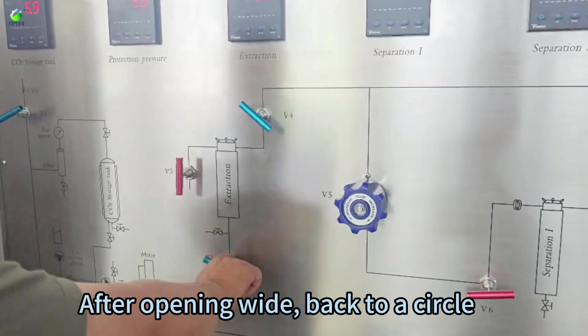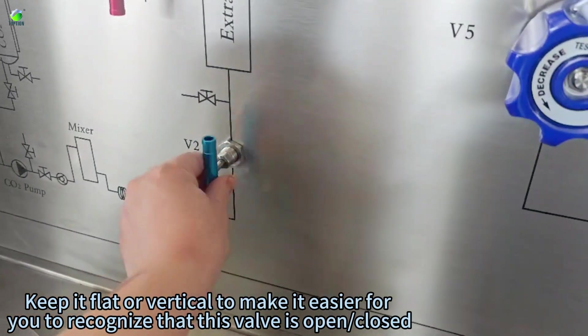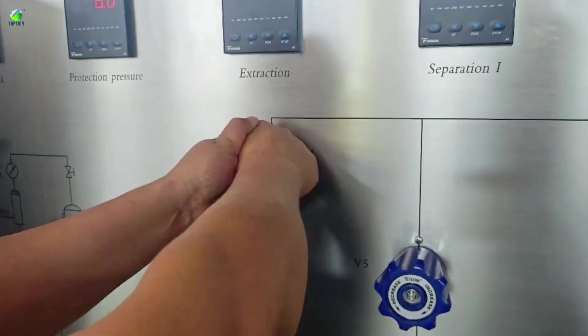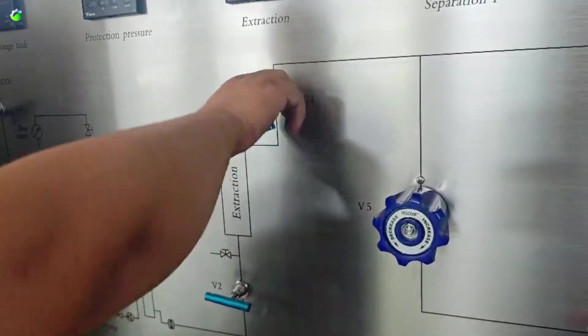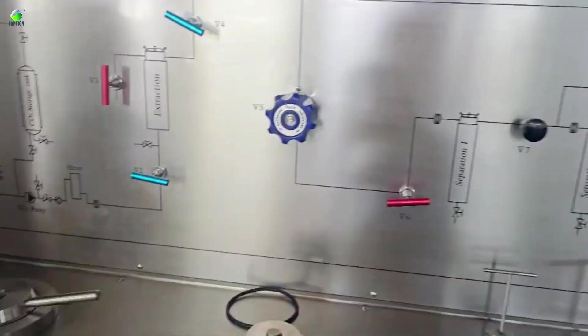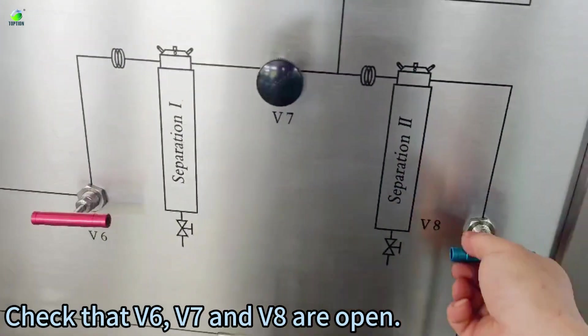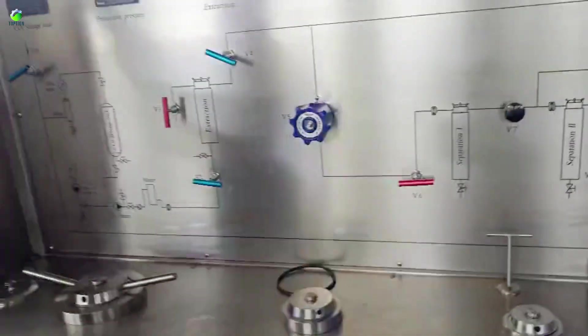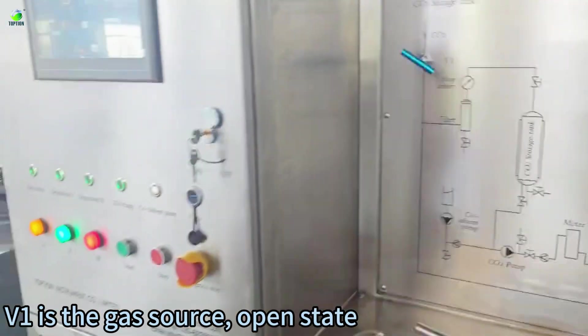After opening wide, back to a circle. Keep it flat or vertical to make it easier for you to recognize that this valve is open and closed. V4 can be opened directly. Check that V7 and V8 are open. The entire airway is open. VE is the gas source, open state.